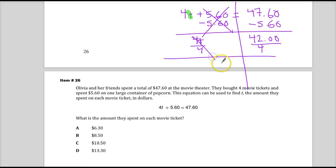So those cancel out. I get t. 42 divided by 4. It's $10.50. And there you go, right there.